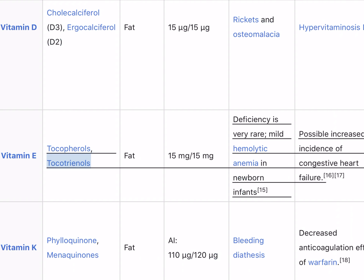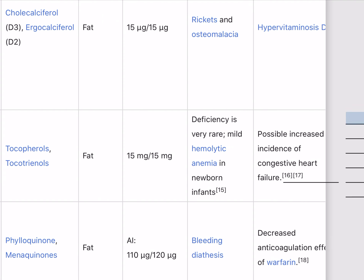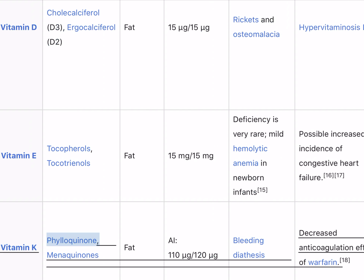Vitamin E (tocopherols and tocotrienols) is fat-soluble; 15 mg/15 mg recommended. Deficiency is very rare but can cause mild hemolytic anemia in newborn infants; possible increased incidence of congestive heart failure at excess doses. Sources include many fruits and vegetables, nuts and seeds, and seed oils.